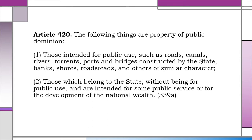Article 420 enumerates the properties of public dominion. But what is public dominion? Public dominion means ownership by the state in that the state has control and administration. In another sense, public dominion means ownership by the public in general, in that not even the state or subdivisions thereof may make them the object of commerce as long as they remain properties for public use — such is the case, for example, of a river or a town plaza.